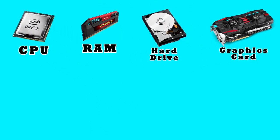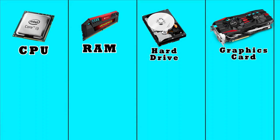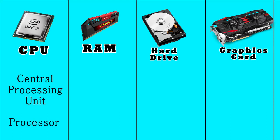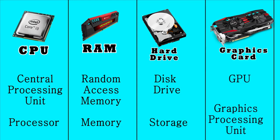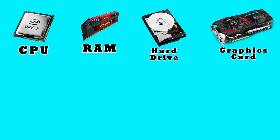The four main components to keep in mind here are CPU, RAM, hard drive, and graphics card. CPU is also known as the central processing unit or processor — these terms are completely interchangeable. RAM stands for random access memory and is often referred to as just memory. A hard drive is often referred to as a disk drive or storage. And a graphics card is also known as a GPU, or graphics processing unit. For this explanation, I'll be using the terms CPU, RAM, hard drive, and graphics card.